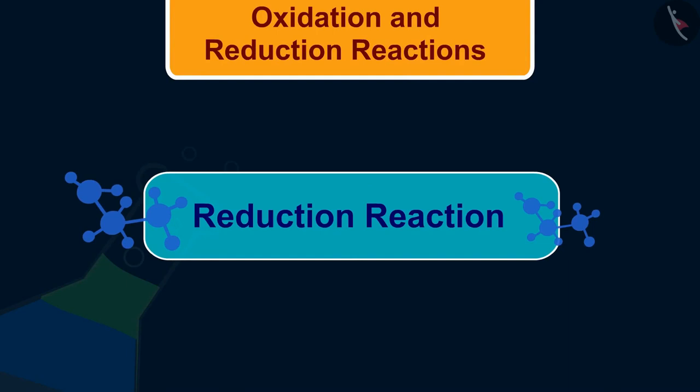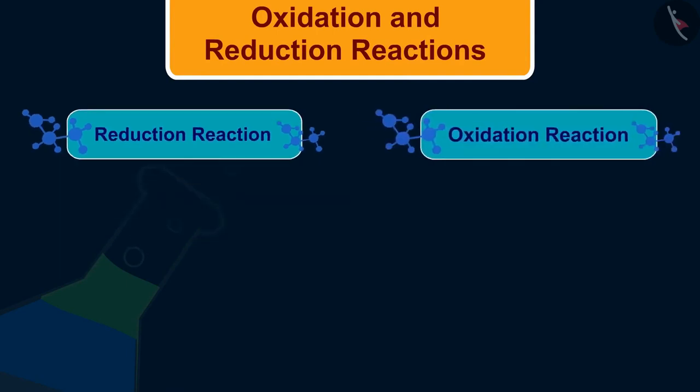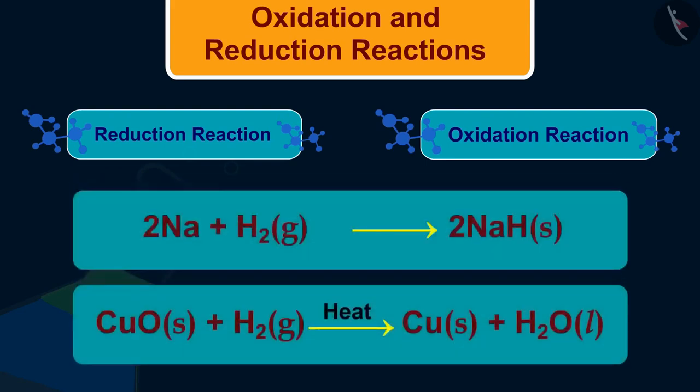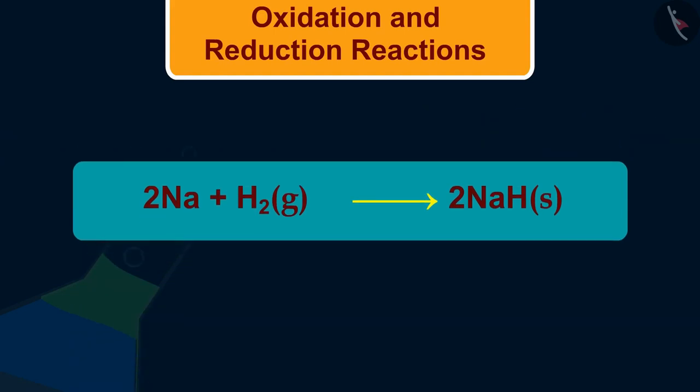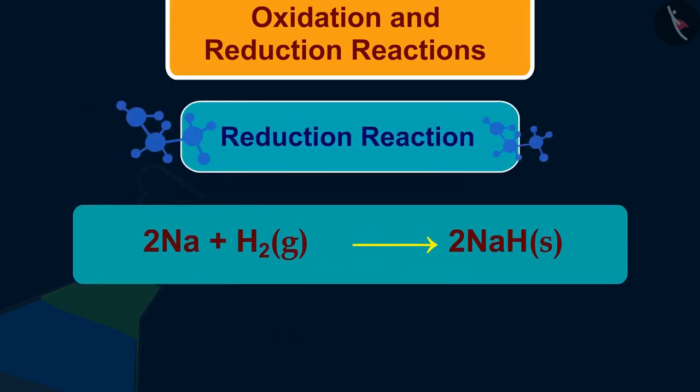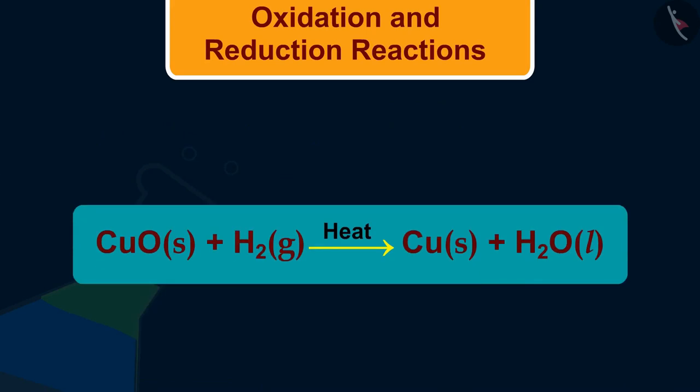Let us now understand oxidation and reduction in more detail through two examples. In this first reaction, hydrogen is increased in sodium. Hence, it is an example of reduction. In the second example, there is a decrease of oxygen in copper oxide and an increase of oxygen in hydrogen.